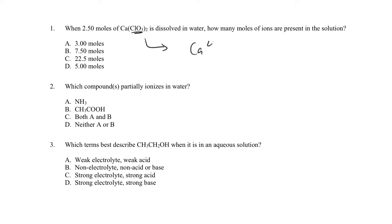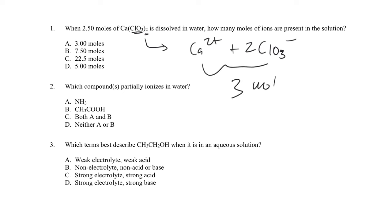Two and a half moles of this compound dissolves in water, giving seven and a half moles of ions. When thinking about the electrolytic nature of the solution, the more ions in solution, the more electrolytic. A solution with calcium chlorate will be very electrolytic compared to a weak acid like HClO2, where very little ionization occurs.